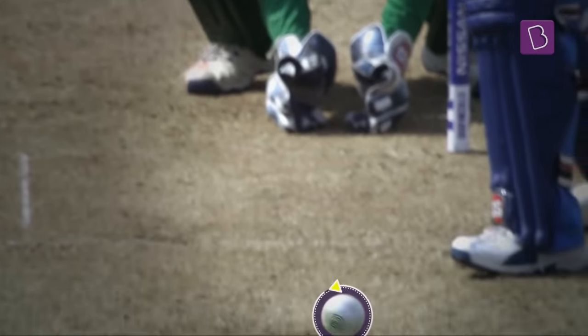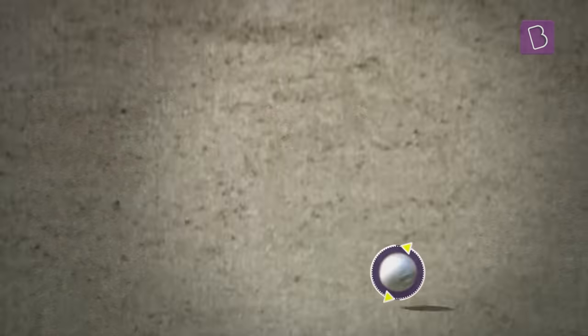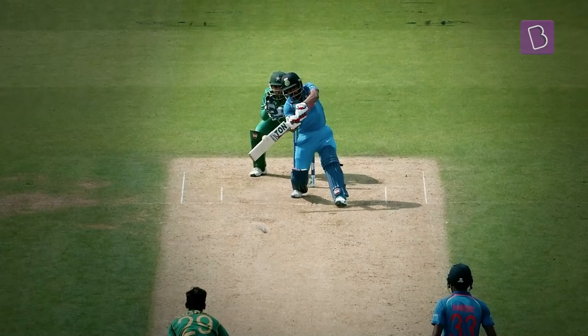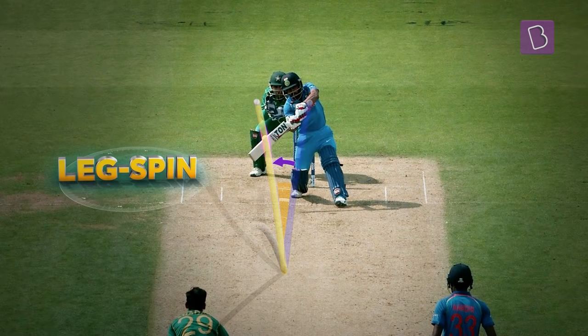And when revolutions are imparted the other way around, the ball deflects away from the right-handed batter — the leg spin.